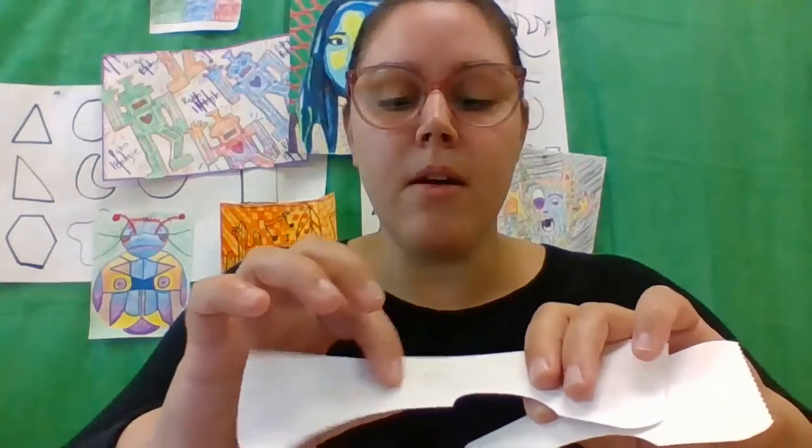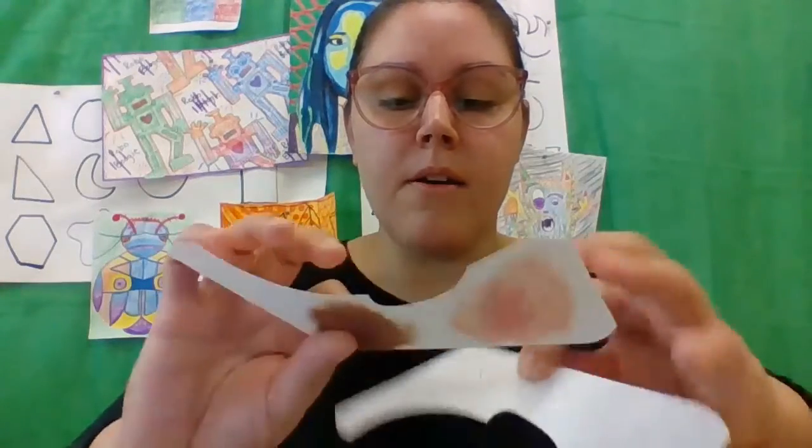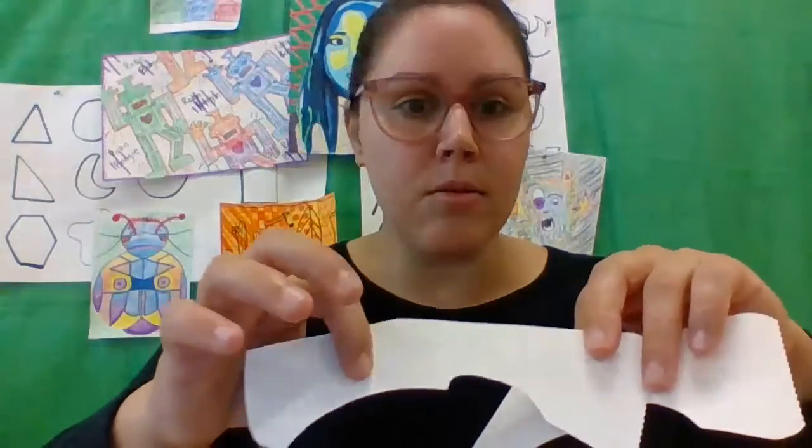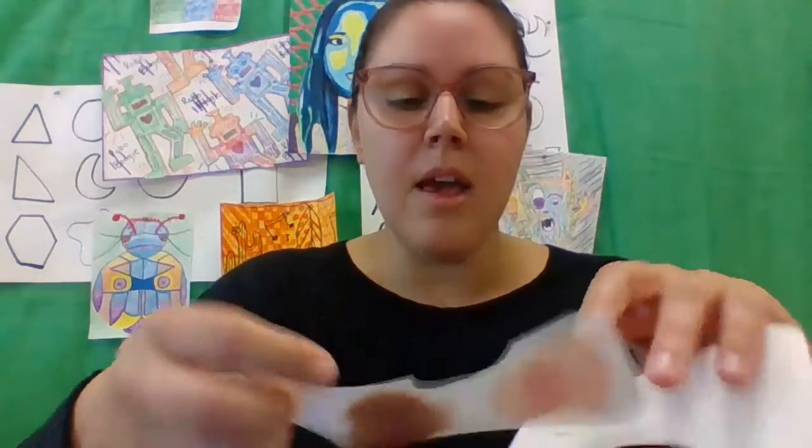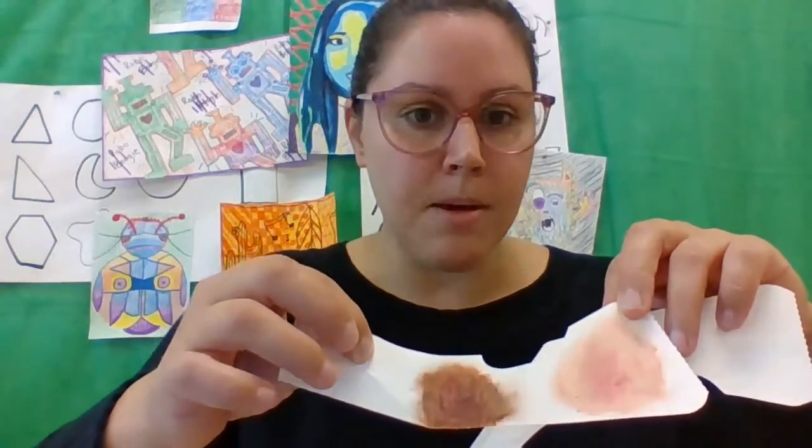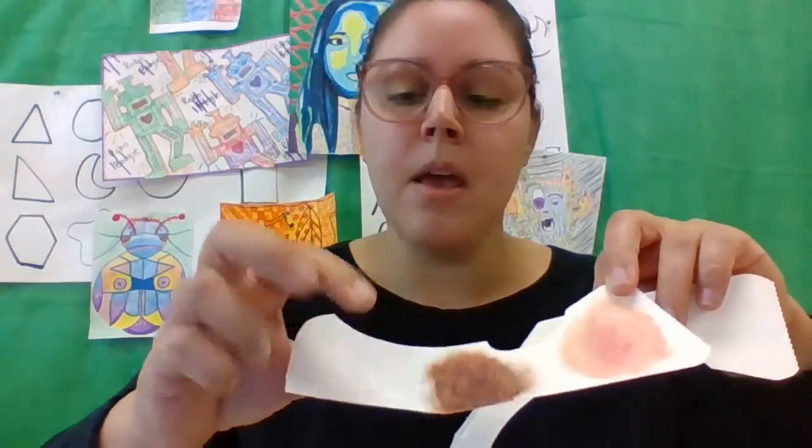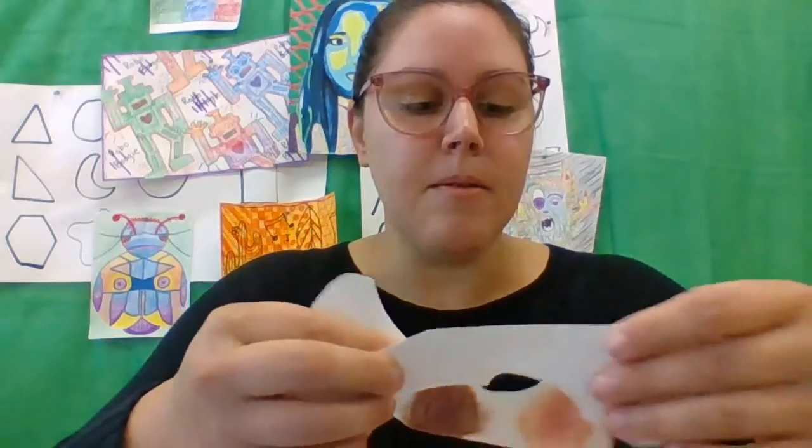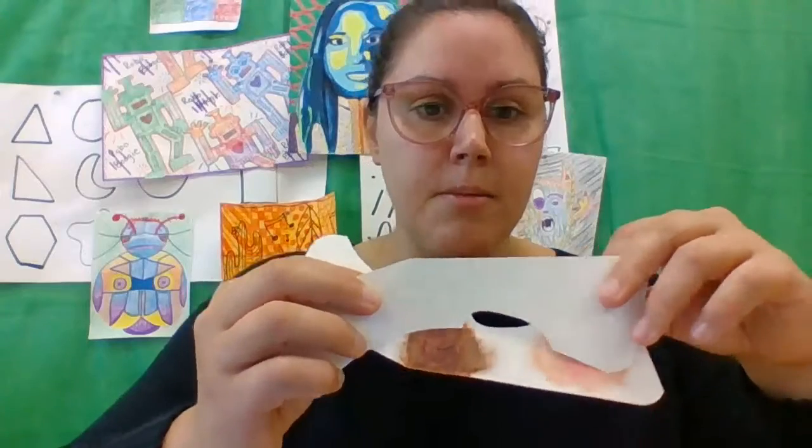I want you to feel this part of those pieces that you ripped off. One side is really smooth and kind of waxy and the other side feels a little bit more like regular paper. When we're working, we want to use the side that's a little bit more like our regular paper.